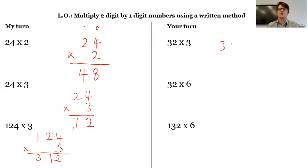Okay, let's go. 32 times 3. 3 times 2 is 6. 3 times 3 is 9. So we get 96.